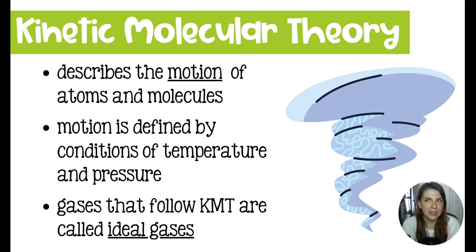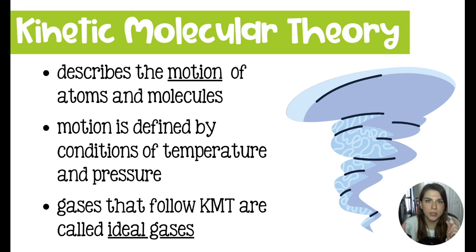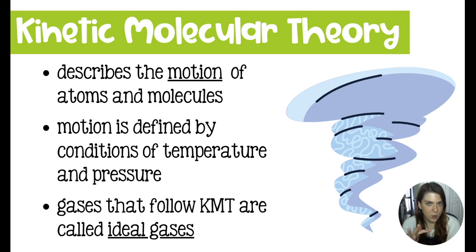Ideal gases don't really actually exist. As we move through what defines an ideal gas and what defines the kinetic molecular theory, when the gases are behaving in an ideal manner, we have a very small difference in the mathematical answer between the algebra and the calculus — so small that it's not that important. But when the gases are acting not ideal, there's a bigger discrepancy. They're not really real, but when they act in the way that we like them to, the difference is not that significant.